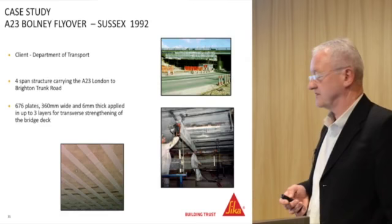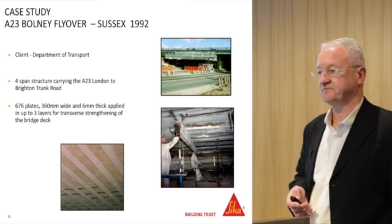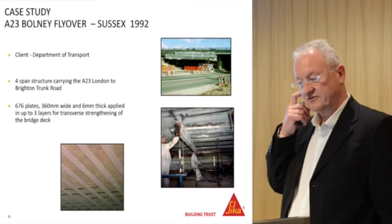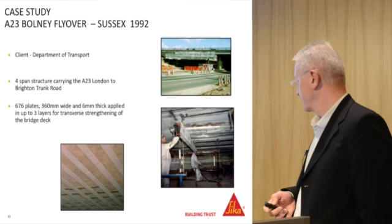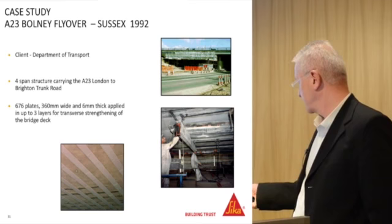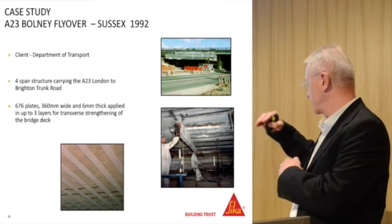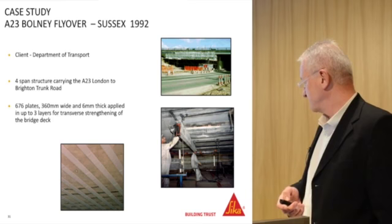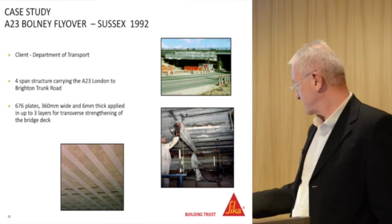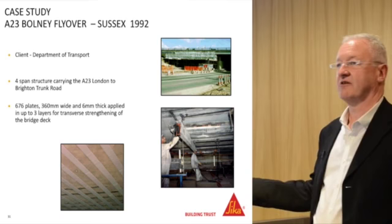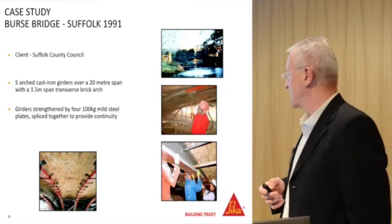Balney Flyover in Sussex — carried out in 1992 for the Department of Transport. This is a four-span bridge where 676 plates were used, 360 mm wide. It's the biggest steel plate bonding project ever undertaken on a bridge to this day using steel plates. You can see the plates going across the underside of the deck, with transverse beams used to support the plate ends before pre-drilling for anchor bolts. Very limited to five metre plate lengths, so laps were required. Once completed and coated, unless you're specifically looking for it, you would not know the bridge had been strengthened.